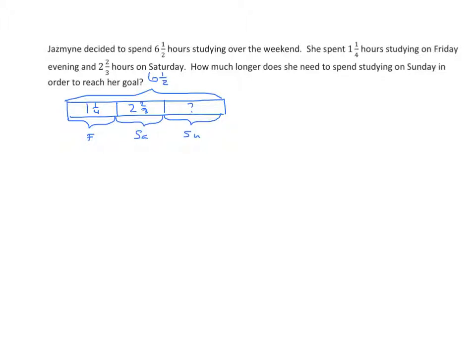This tape diagram gives us a couple alternatives. We've seen this one before. One way to solve this is to find the sum of Friday and Saturday or 1 and 1 fourth plus 2 and 2 thirds and subtract that from 6 and 1 half. So the expression would look like this, and I'm trying to get you guys to write the whole expression out because very frequently we forget to complete the problem. So I have 6 and 1 half minus the sum of 1 and 1 fourth and 2 and 2 thirds. So when we do that, we're going to first solve the expression, the addition expression, in the parentheses. And whatever the sum is, we're going to subtract it from 6 and 1 half.